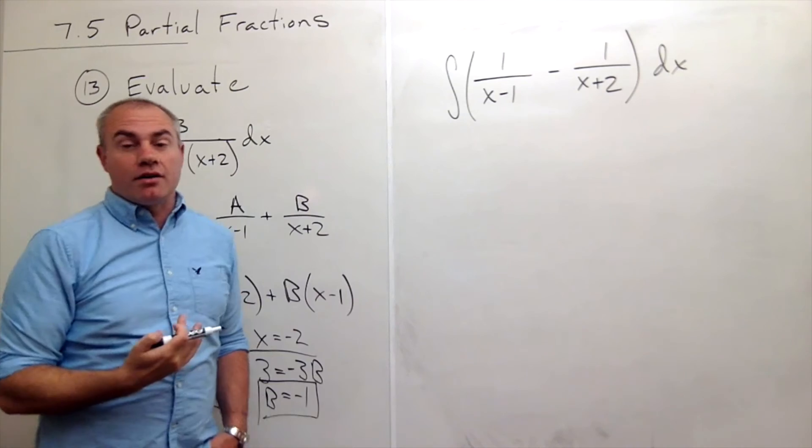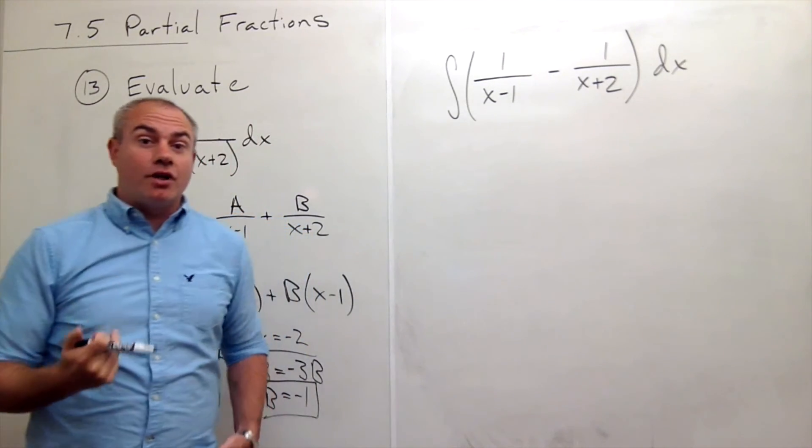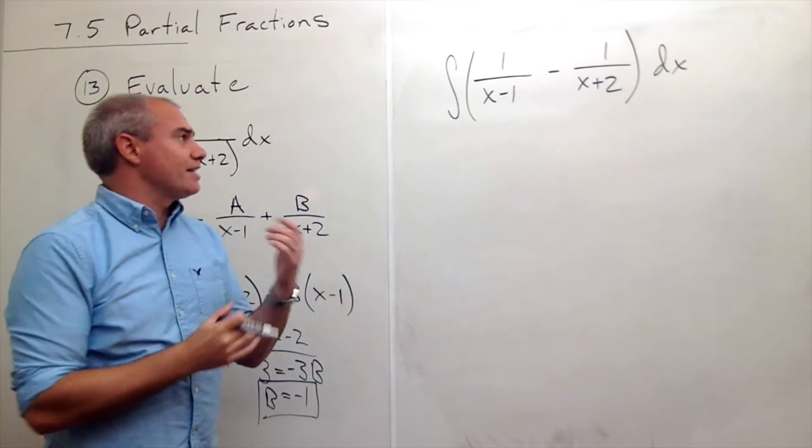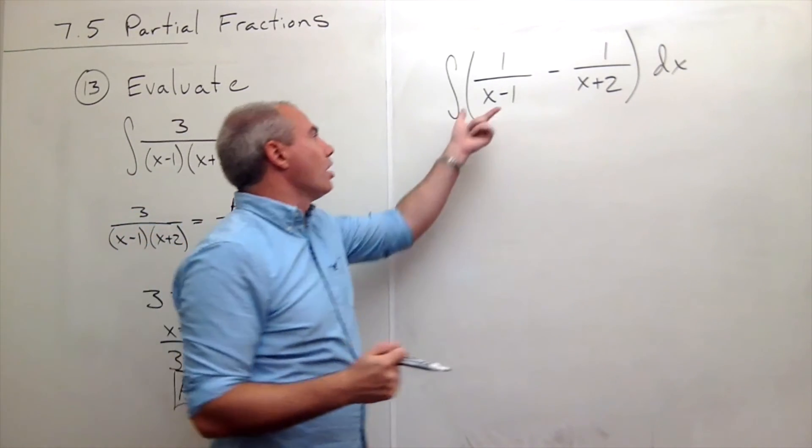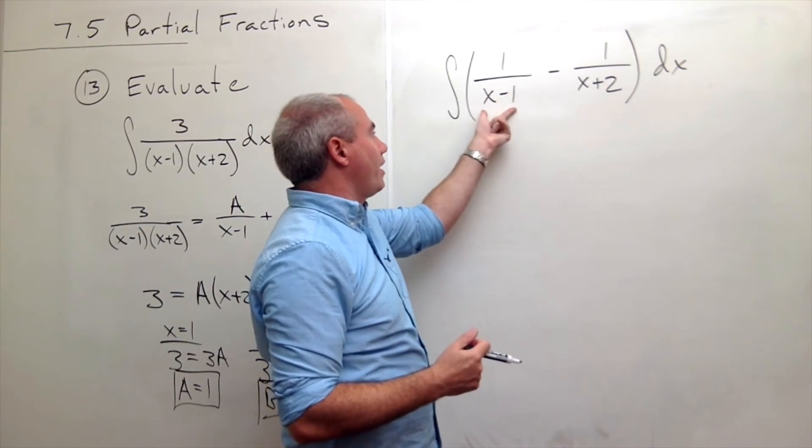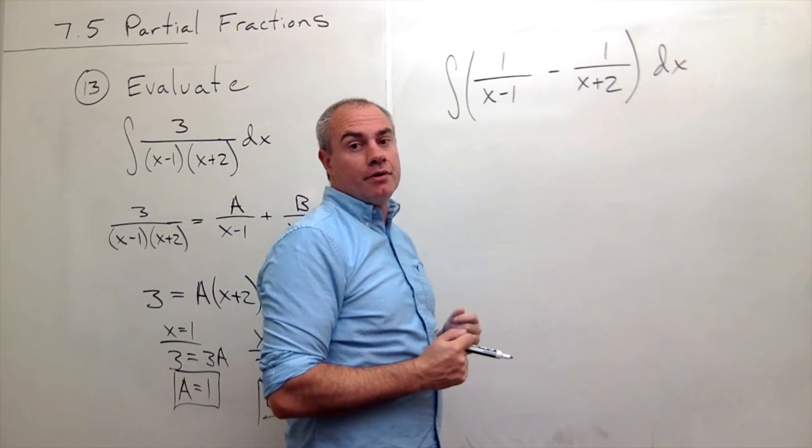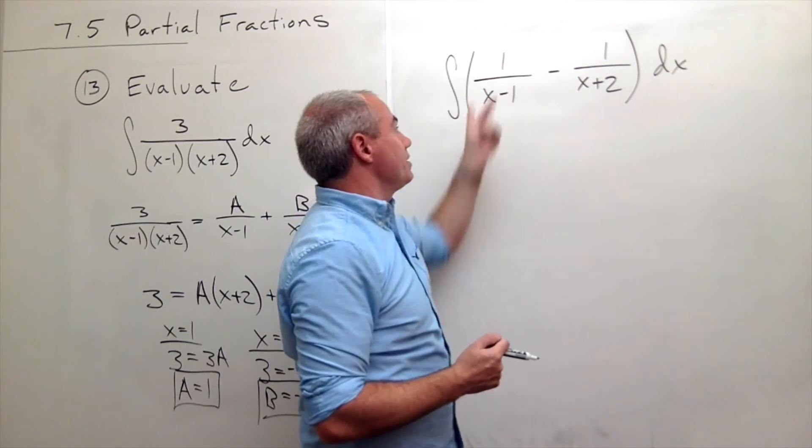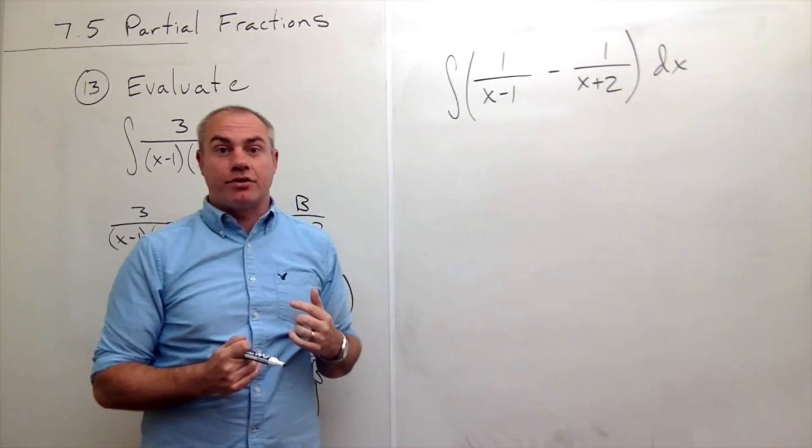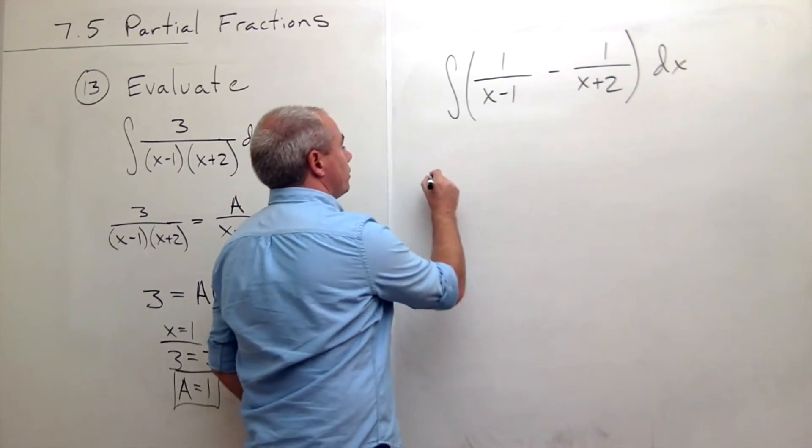Both of these are in the form of a natural log, and how do I know that? Well the derivative of the bottom is the top. If the derivative of the bottom is the top, it's in the form of a natural log. So the antiderivative is a natural log.